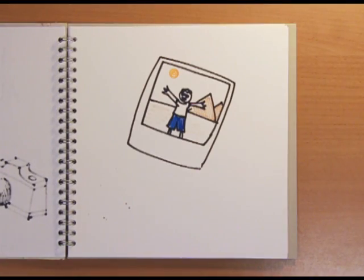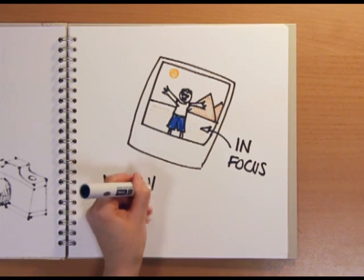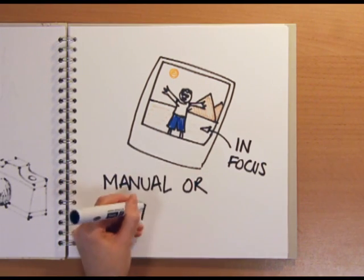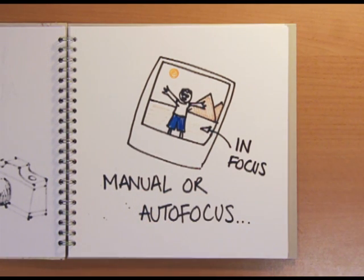When you take a picture with a camera, you want the image to be in focus. Some cameras focus manually, meaning you control what it focuses on. But most modern digital cameras use autofocus to focus on the objects in the picture. But how do they do it?